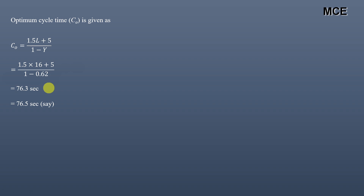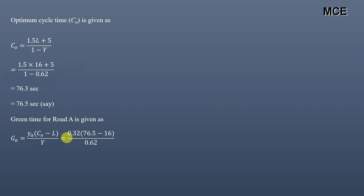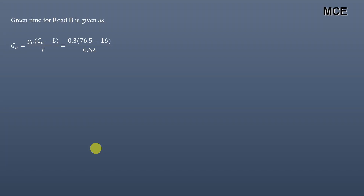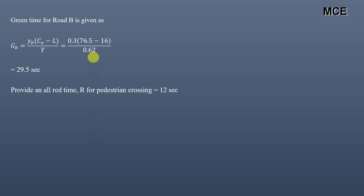The green time for road A is: GA = (yA / Y) × (C0 − L) = (0.32 / 0.62) × (76.5 − 16) = 31 seconds. Similarly, the green time for road B is: GB = (yB / Y) × (C0 − L) = (0.30 / 0.62) × (76.5 − 16) = 29.5 seconds.